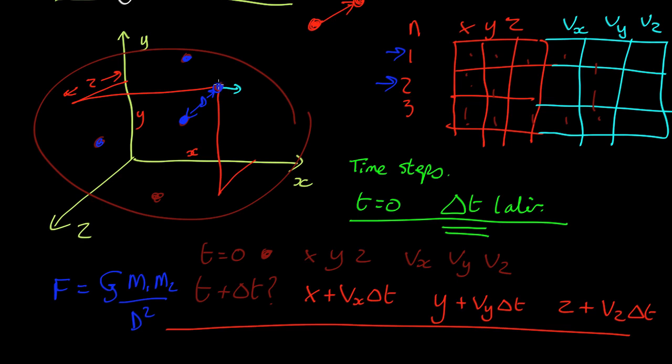So what we can do is for each particle, we can then go through every other particle and work out the gravitational force. So in this case, this will be the closest, so there will be a force pushing in that direction, which is quite strong. This particle is further away, so there will be a weaker force in this direction, a force in that direction, and a force in this direction.